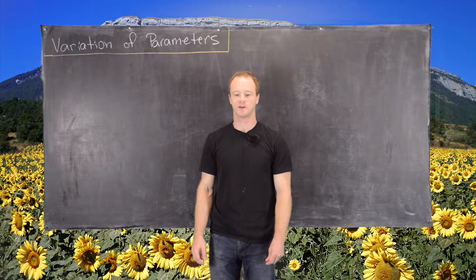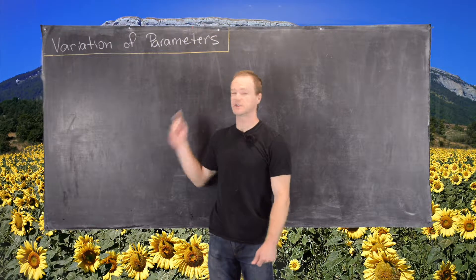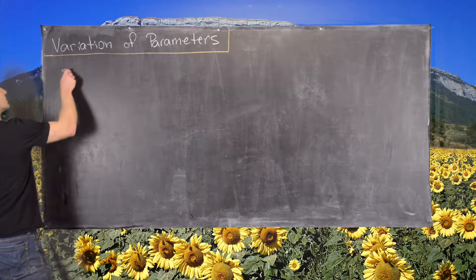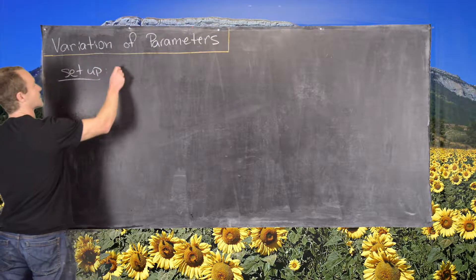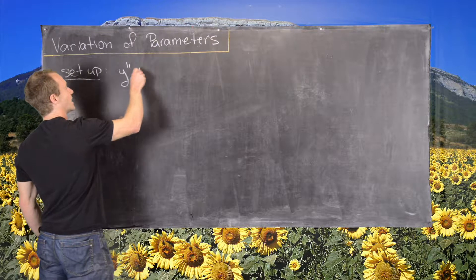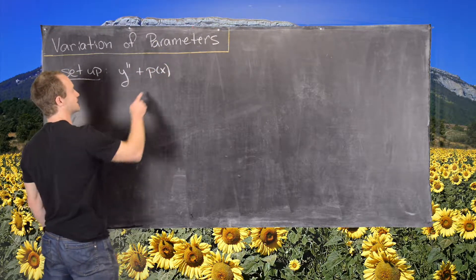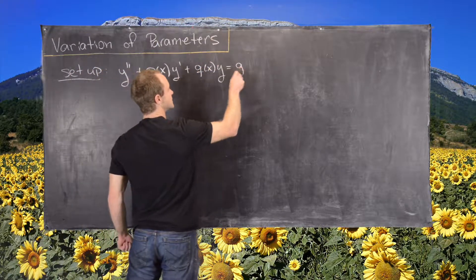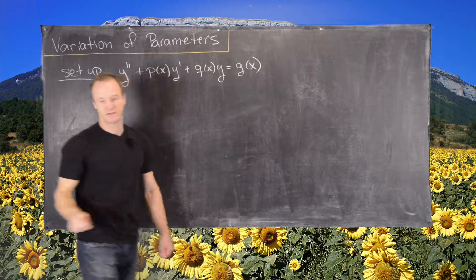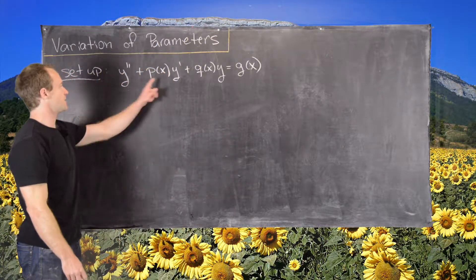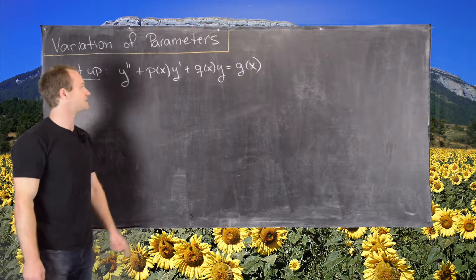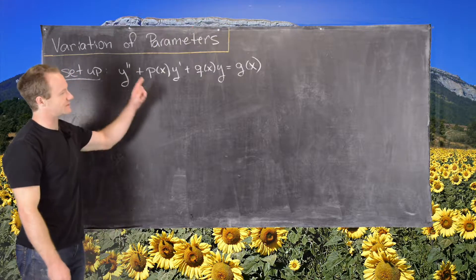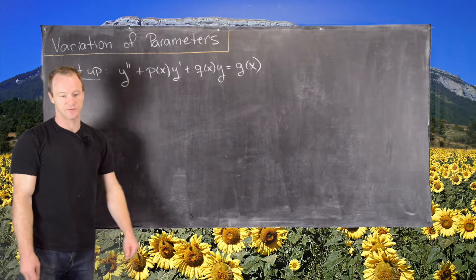In this video we're going to look at a method for solving differential equations known as variation of parameters. Our setup is a second order differential equation of the form y double prime plus p(x) times y prime plus q(x) times y equals g(x). In theory p(x) and q(x) can be any nice functions, but in practice they're often just constants. We'll develop this theory for p(x) and q(x) being functions.